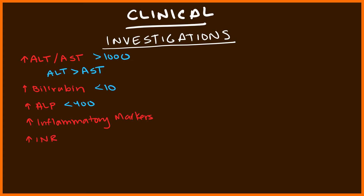INR is important to measure. However, it's only increased if the patient has fulminant liver failure, so if it is increased, it's a very poor prognostic sign and you need to watch that patient carefully. Make sure the patient is not on warfarin, and as a rule of thumb, INR is a good measure of hepatic function in the short term, because AST and ALT could be normal in patients with chronic liver disease.